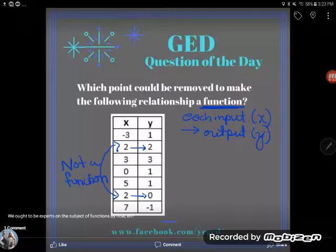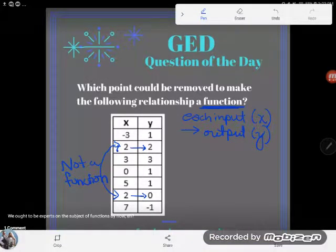If I want to force it to be a function, one of these points has got to be removed from the relationship. So it doesn't matter which one, you could take either one. So which point could be removed to make the following relationship a function?